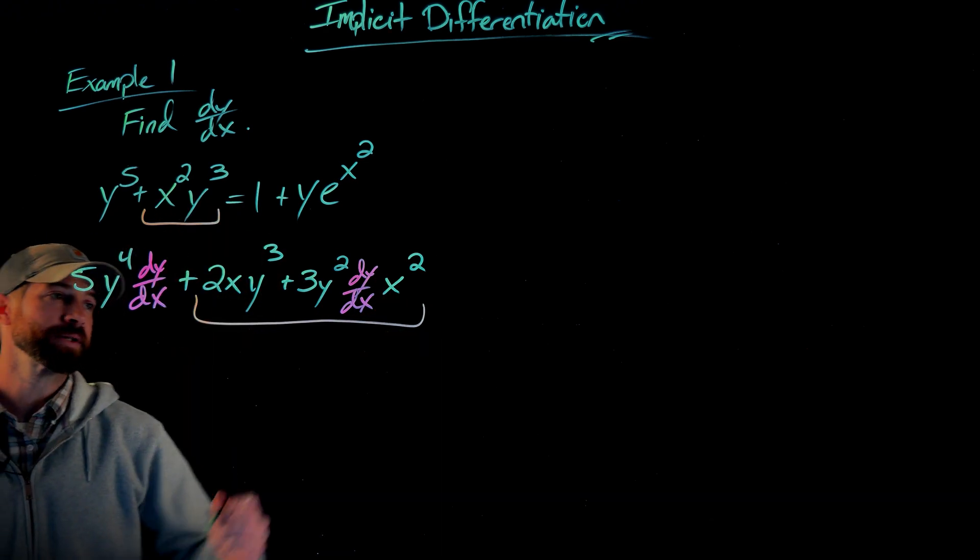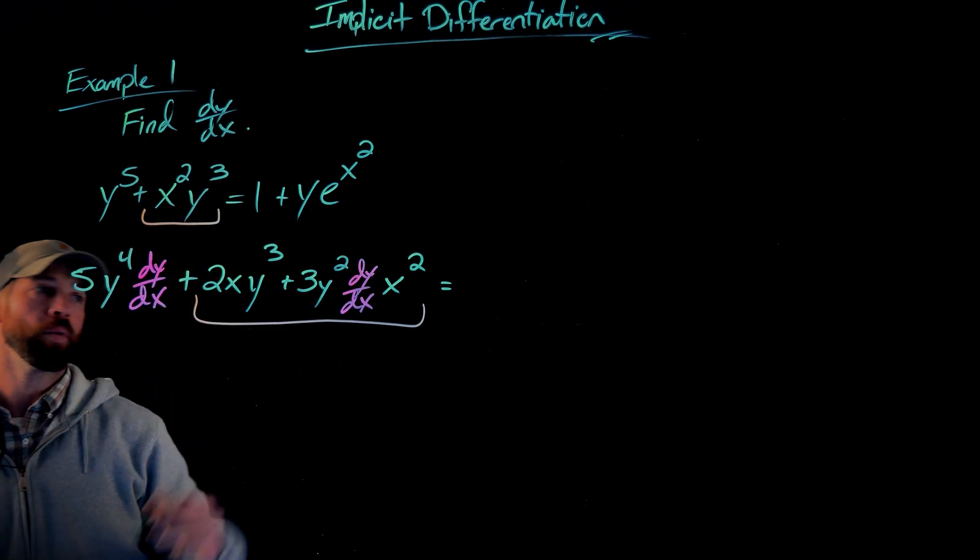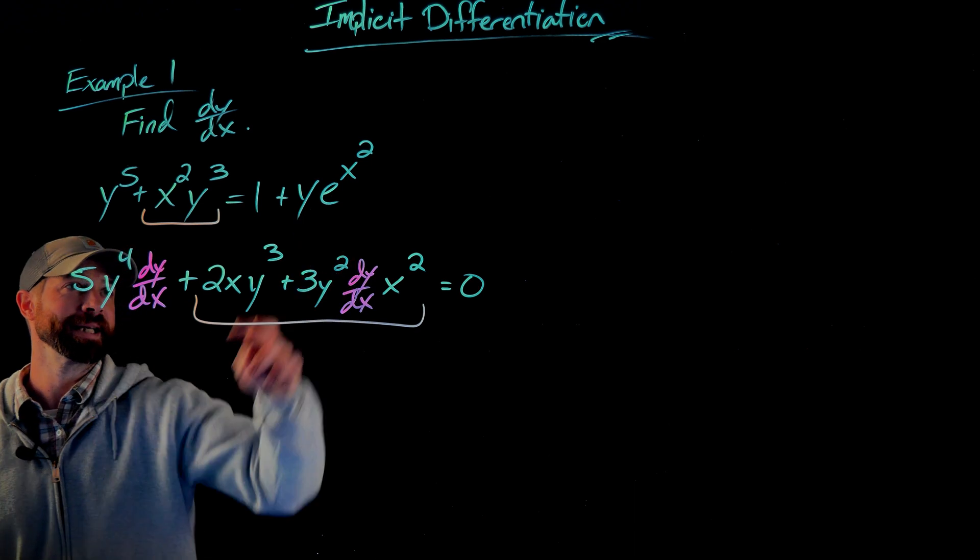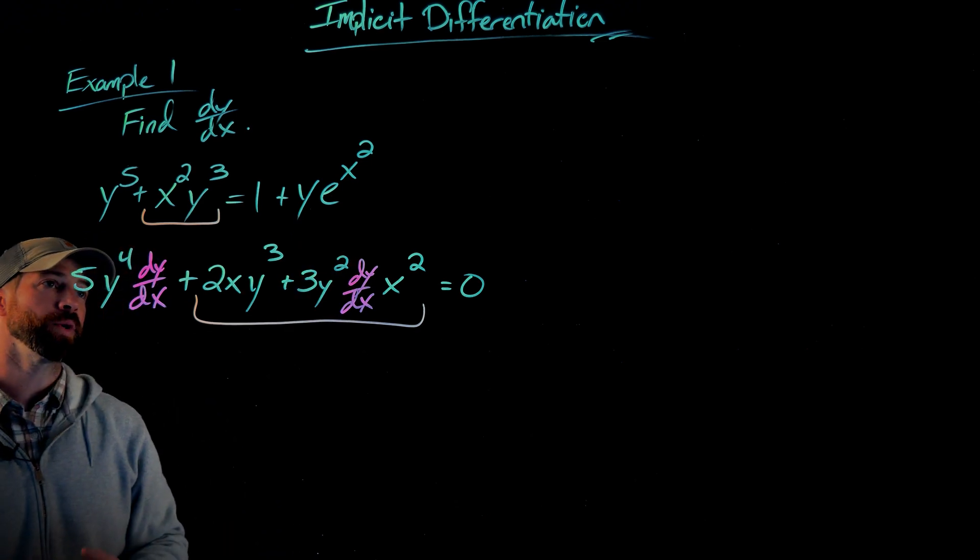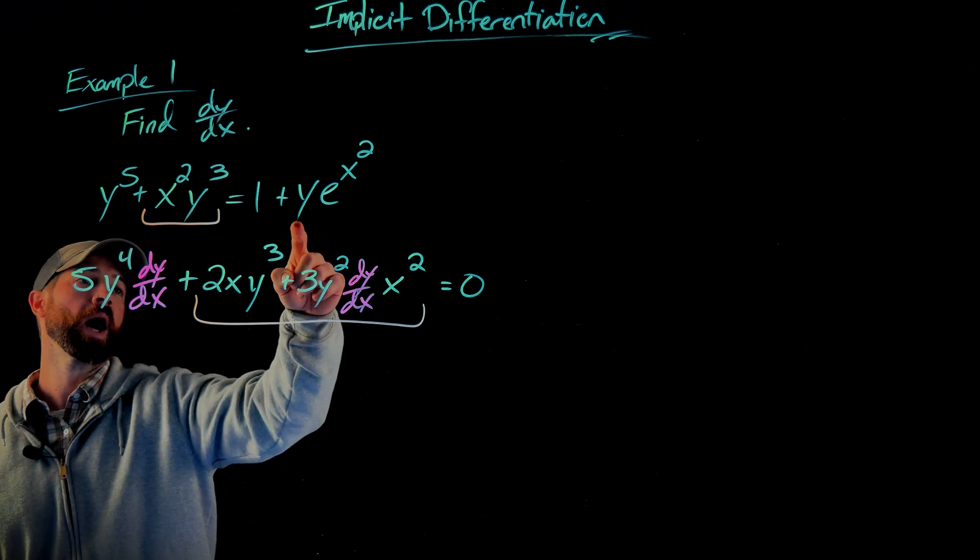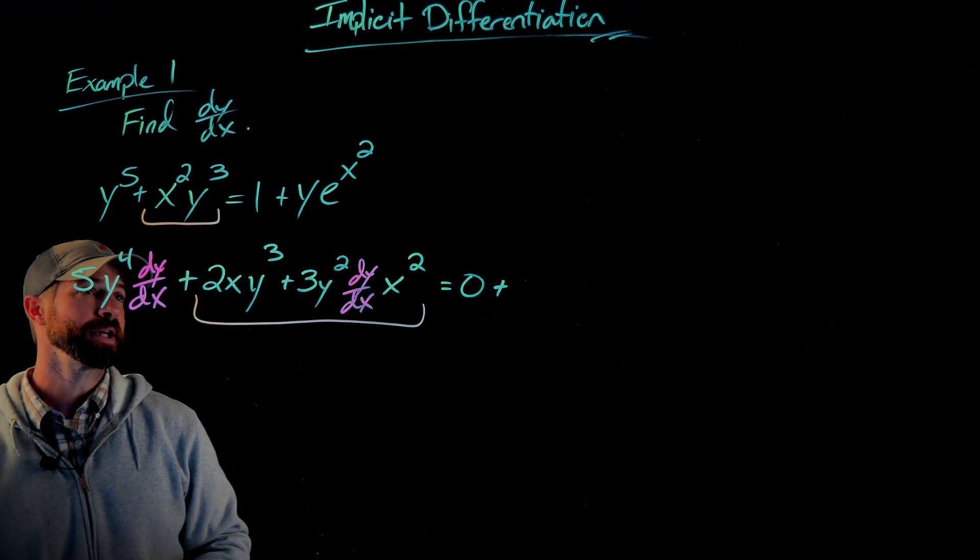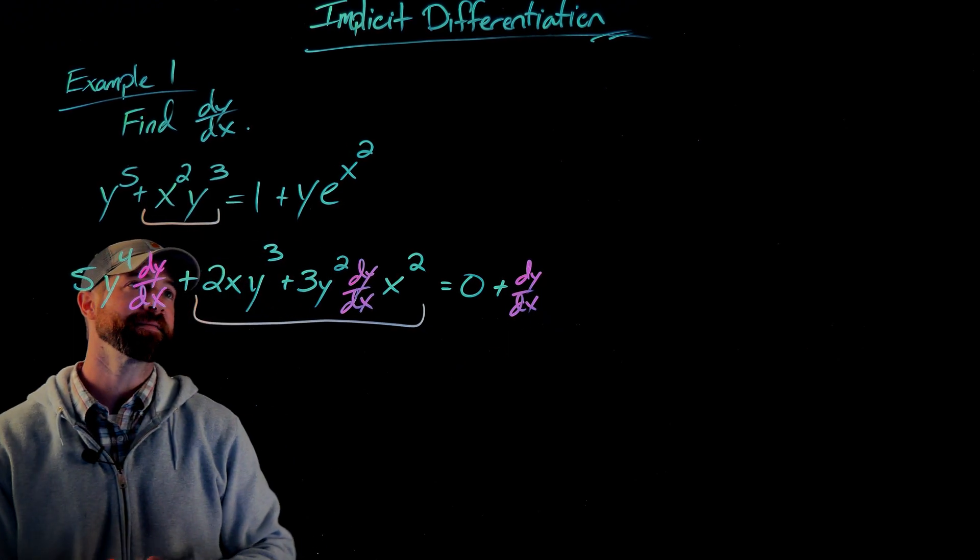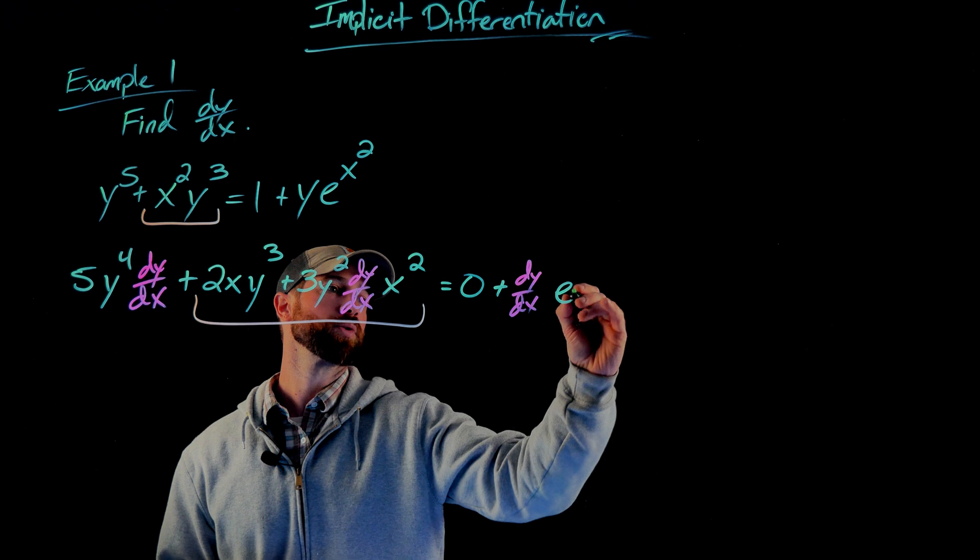We move forward to the other side of the equation. The derivative of 1 is 0. That's pretty easy. Now I differentiate this. And now again, what I'm going to do is use the product rule for this. So I'm first going to differentiate y and when I differentiate y, I just get dy/dx times the second factor e to the x squared.